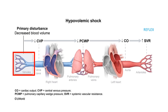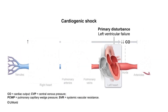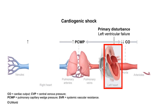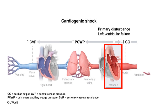For cardiogenic shock, the primary disturbance is left ventricular failure — it cannot pump blood to the rest of the body, so the main culprit is decreased cardiac output. The backward effect is back pressure causing blood to back up in the lungs, increasing left atrial pressure and therefore PCWP. This back pressure also affects the right heart, increasing central venous pressure. The forward effect: because cardiac output is so decreased, blood pressure falls, leading to a reflex increase in systemic vascular resistance.